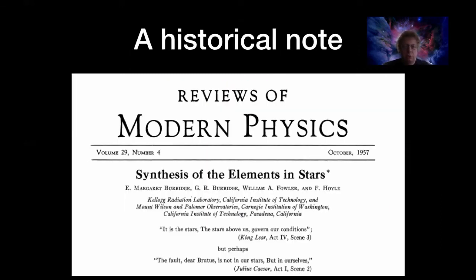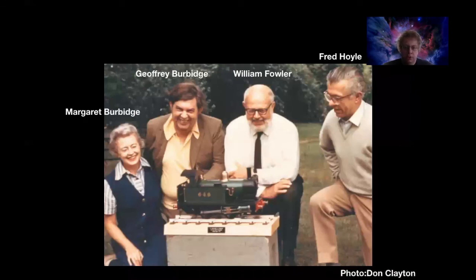To end on a historical note: this theory was first fully laid out in 1957 in a paper called 'Synthesis of Elements in Stars,' written by Margaret Burbidge, Geoffrey Burbidge, William Fowler, and Fred Hoyle — whom you'll remember from our discussions of steady-state cosmology. They developed this theory partly trying to explain how elements could form without the Big Bang, so it was initially seen as a victory for steady-state theory. Even though that didn't pan out, we still learned an enormous amount as a result.